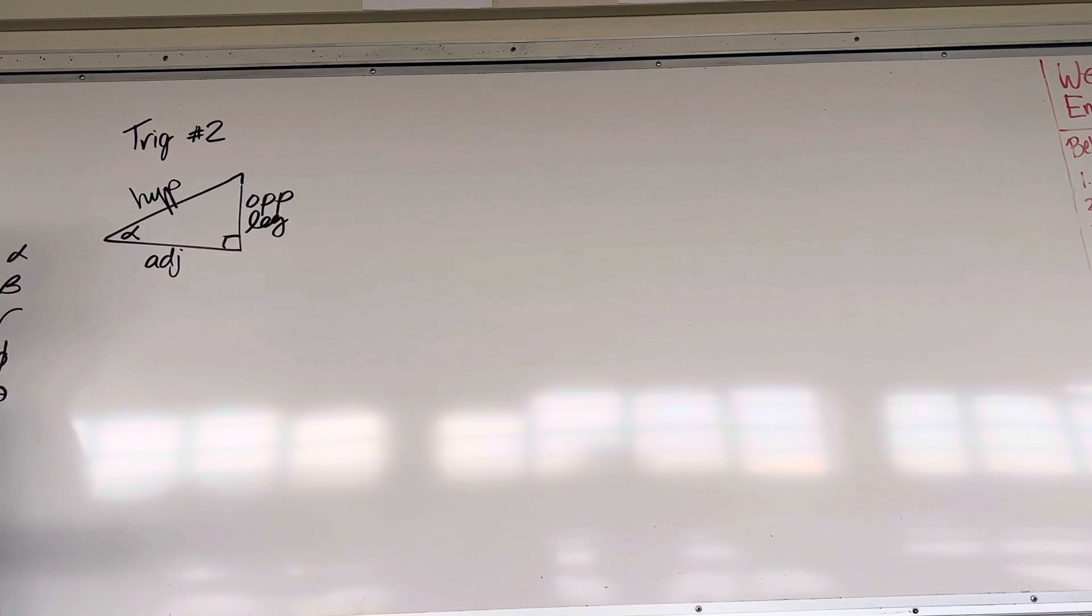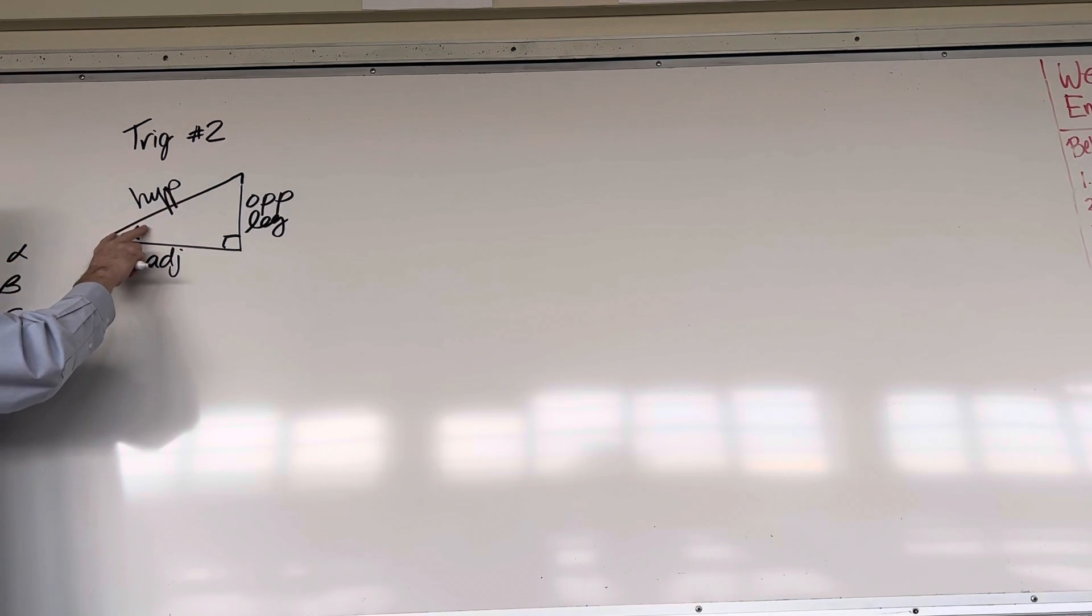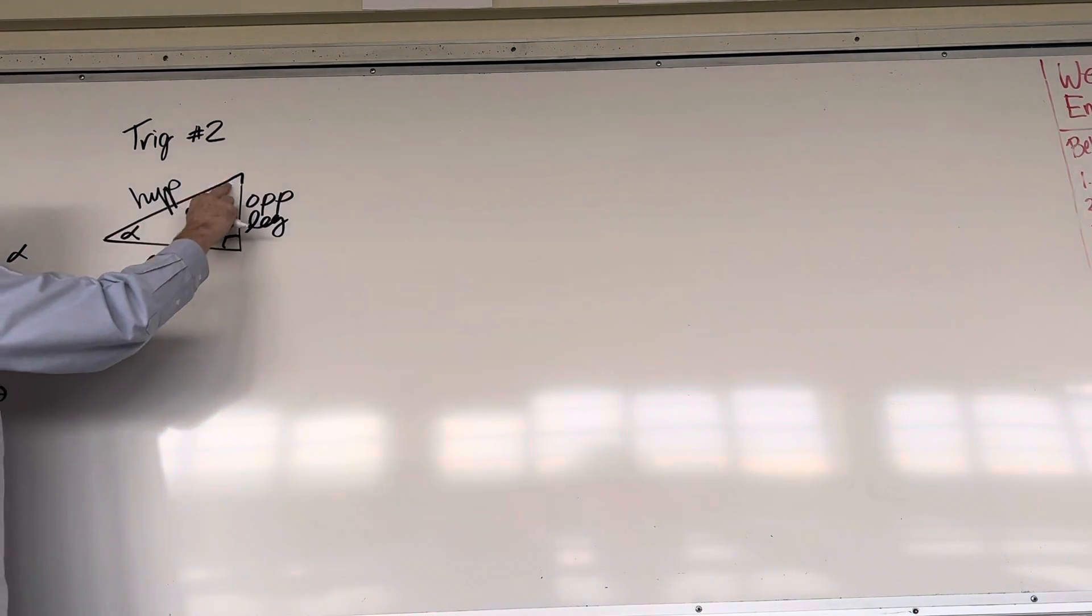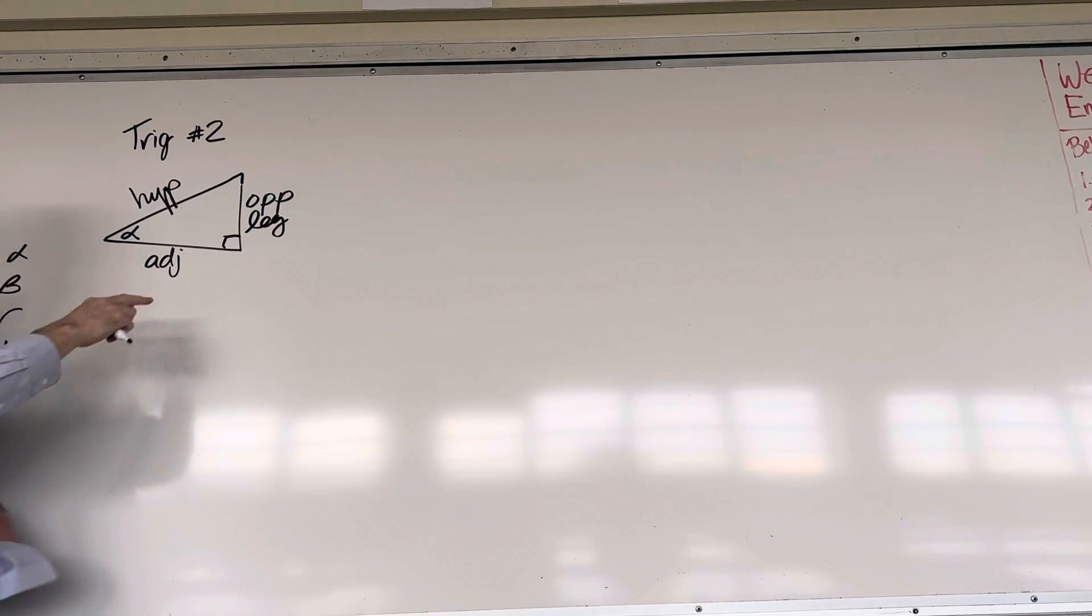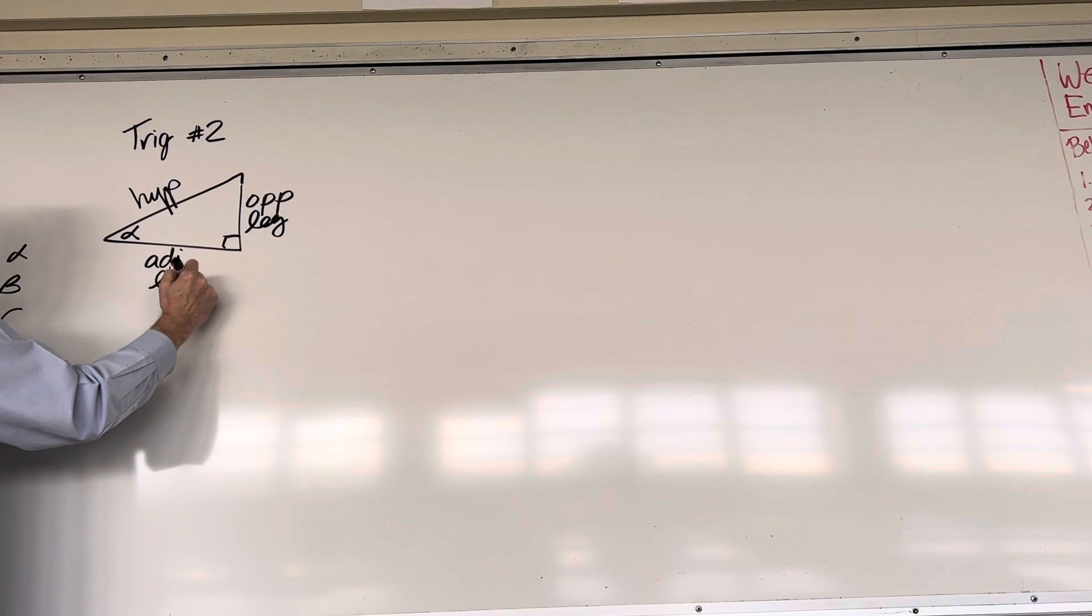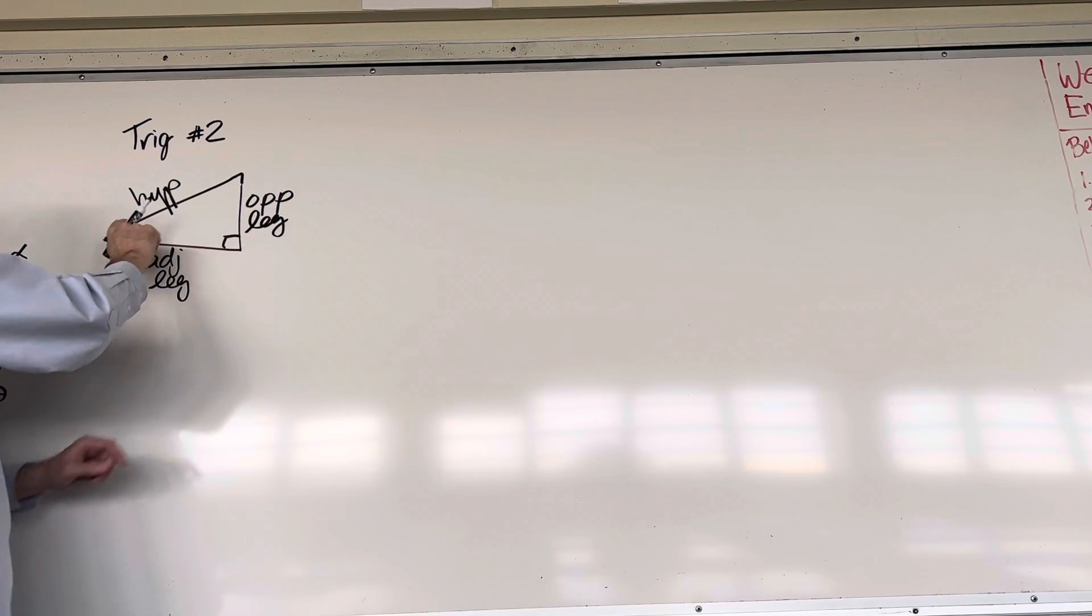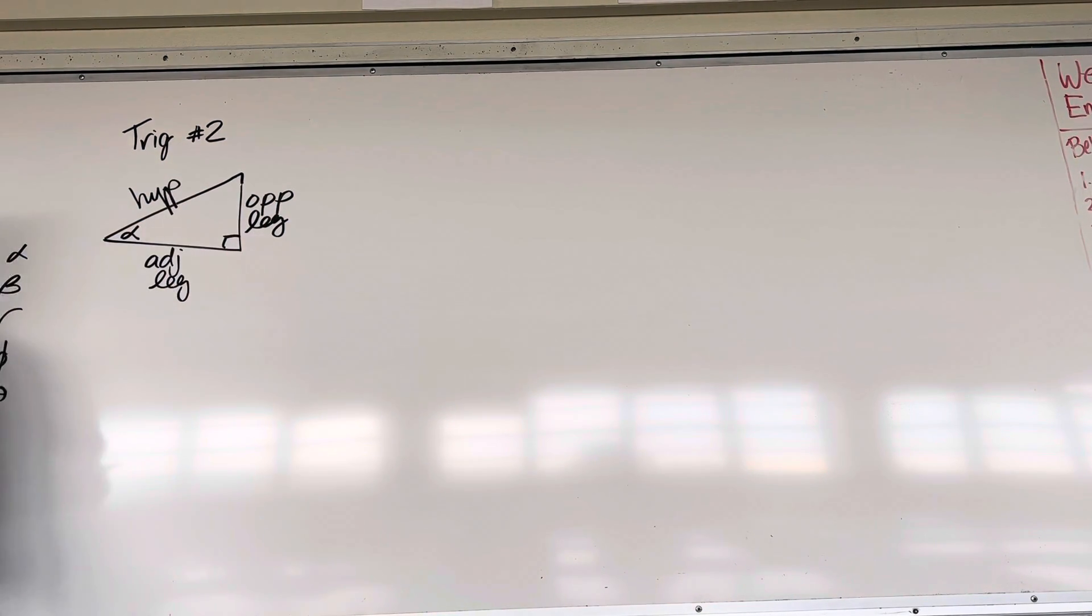Now, we're not going to do it this lesson, but on later lessons, we'll switch the reference angle from this location up to here, and then the op leg will be across from it over here. So the op leg and the adj leg, they can switch depending on where that reference angle is. Why is there only one reference angle? Because we're only interested in one angle at a time.